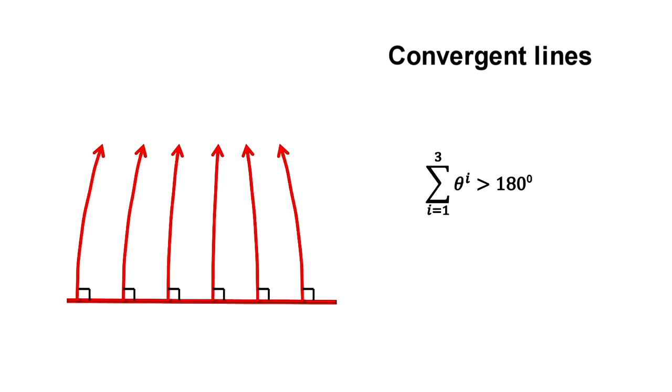Here, the sum of the angles of a triangle is greater than 180 degrees, and the circumference of a circle is less than 2 pi times its radius. This is spherical geometry. It represents space with a positive curvature.